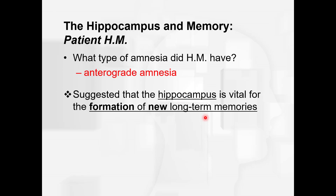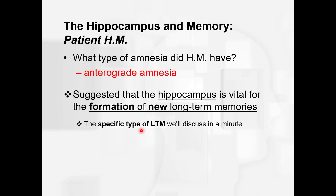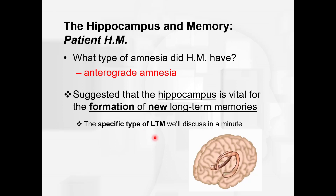Now the question is: is the hippocampus needed for all types of long-term memories? We'll discuss the specific types in a minute — is it all of them: procedural, semantic, and episodic? Or is it just one or two types? Here again is the hippocampus which HM had removed.